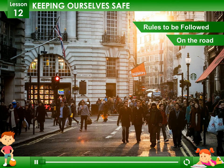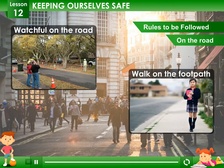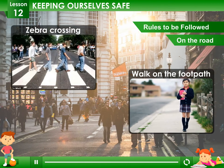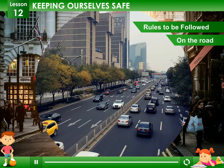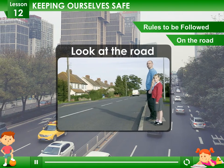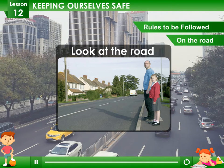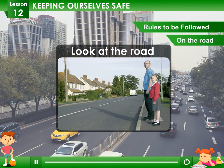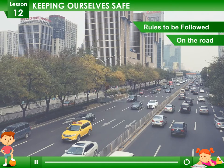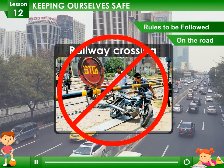On the road, always be watchful. Walk on the footpath and cross the road at the zebra crossing. To cross the road, first look to the right, then to the left, and then again to the right. Cross only when the road is clear. Follow the traffic lights. Never cross a railway crossing when the gates are closed.